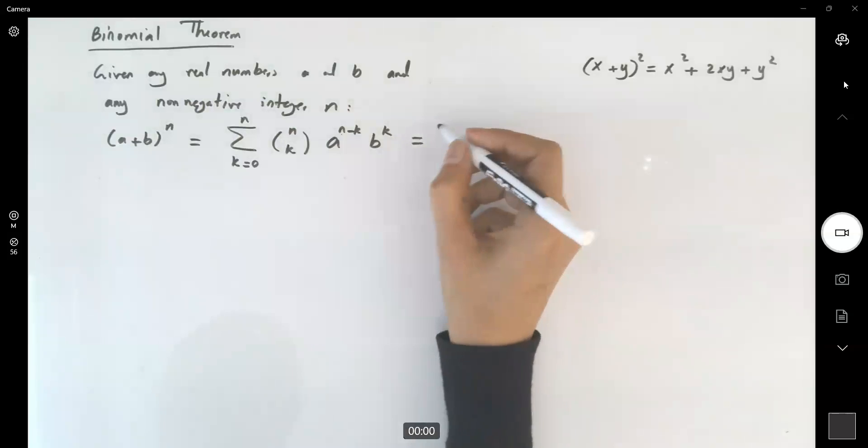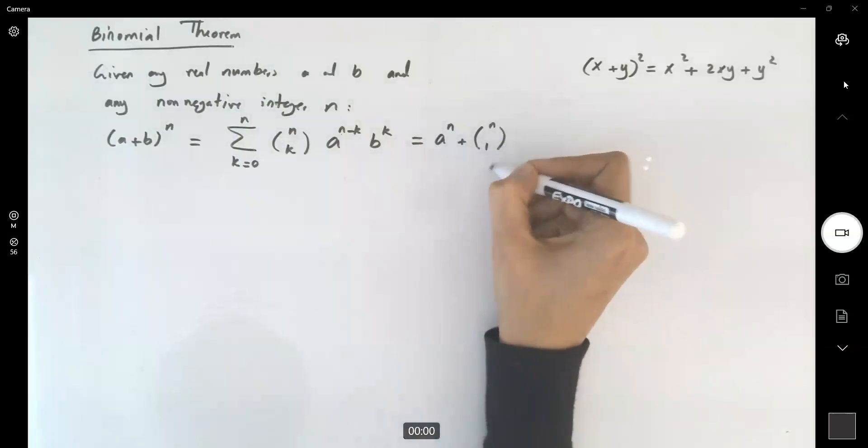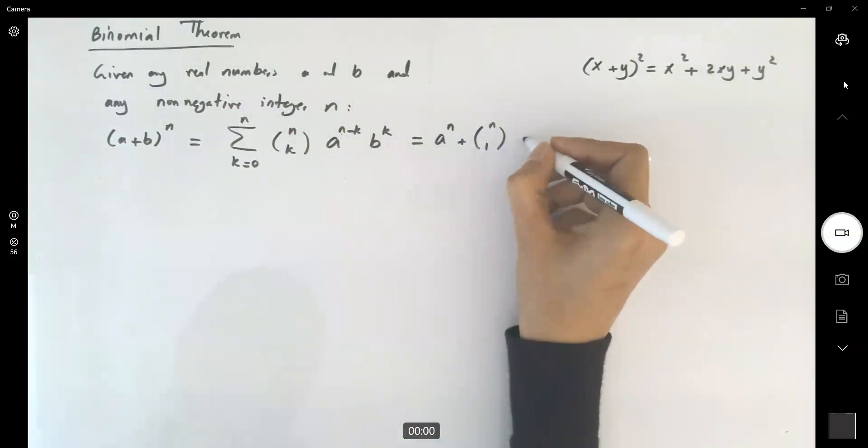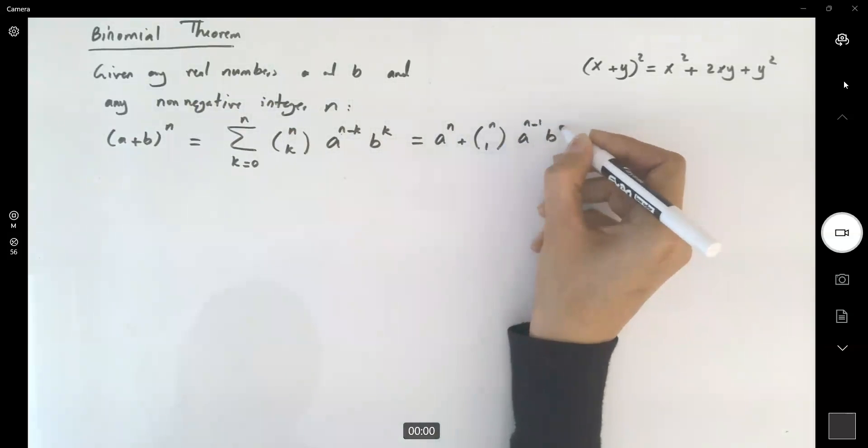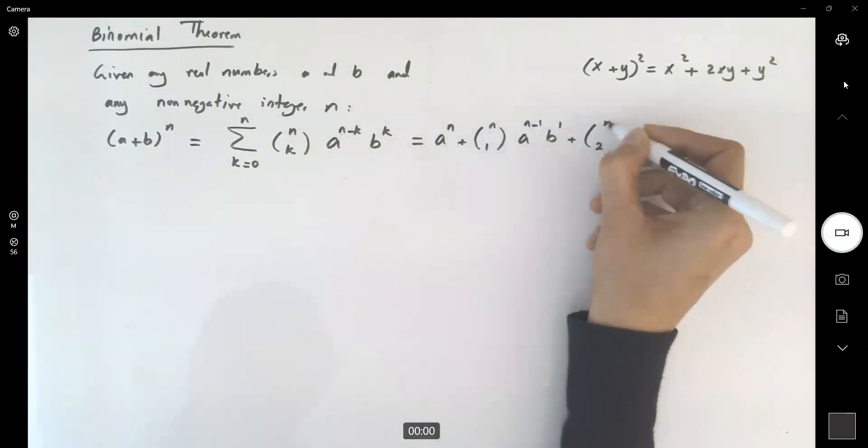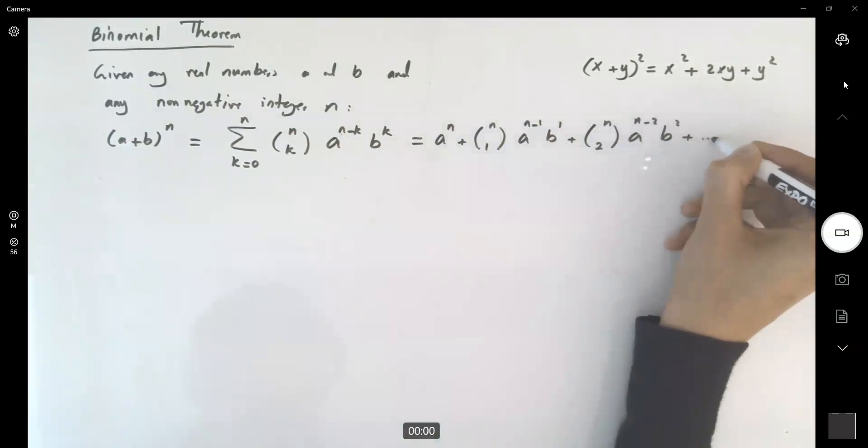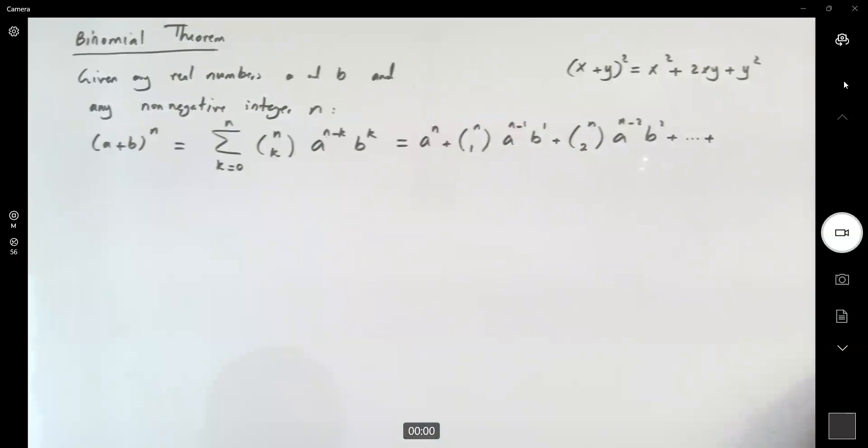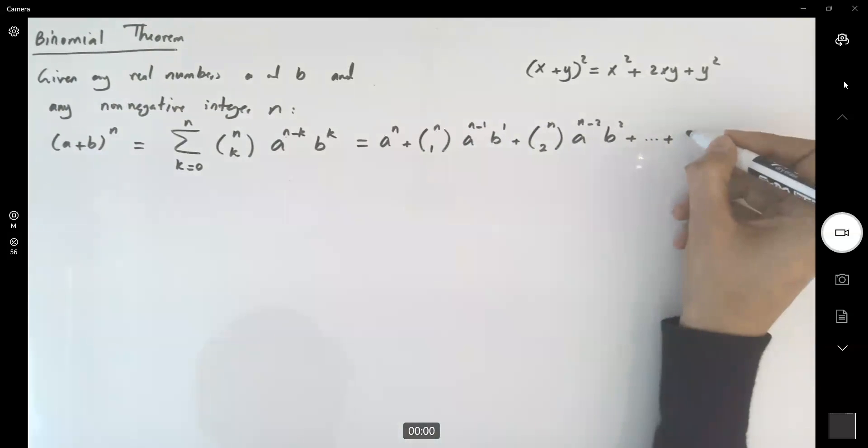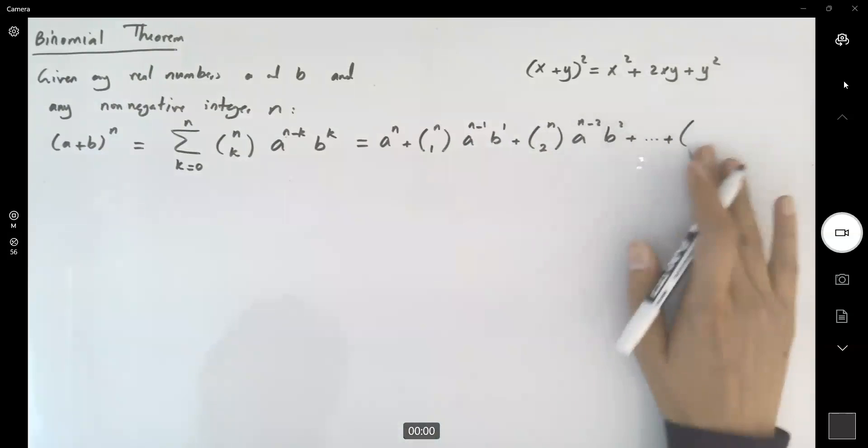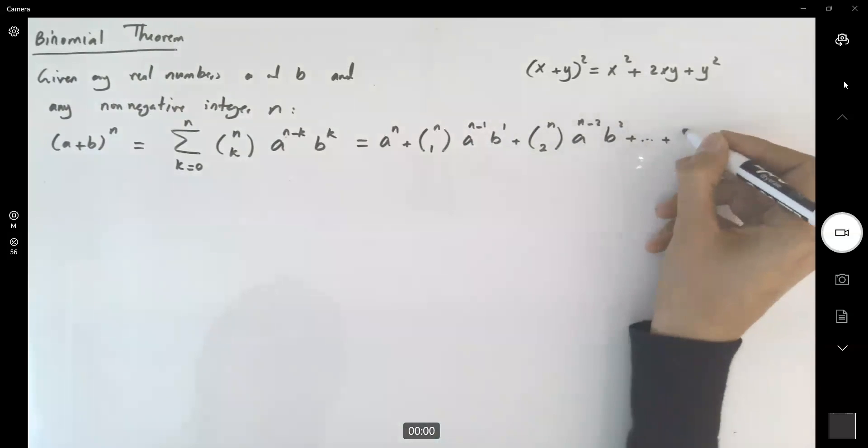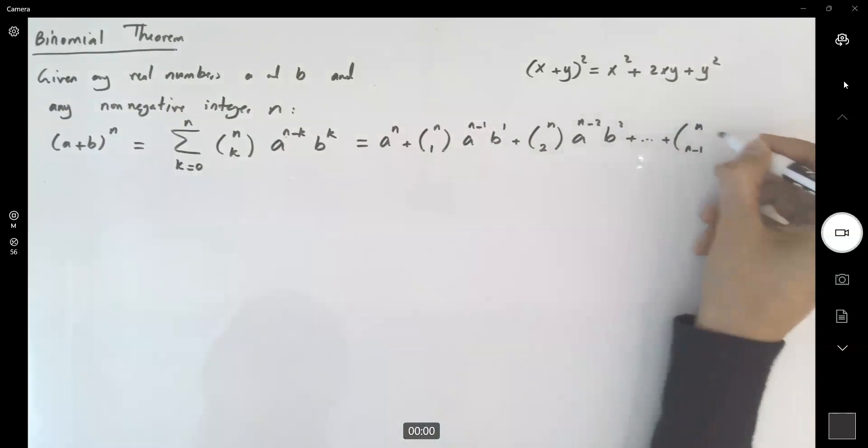You can write it this way. So here you have a to power n plus the combination of 1 out of n objects, a to power n minus 1, b to the first power, plus the combination of 2 of n, a to power n minus 2, b squared, plus the rest of the terms. And let me write the last term for you here as well. The combination of n minus 1 out of n, a to power 1, b to power n minus 1, plus b to the n.